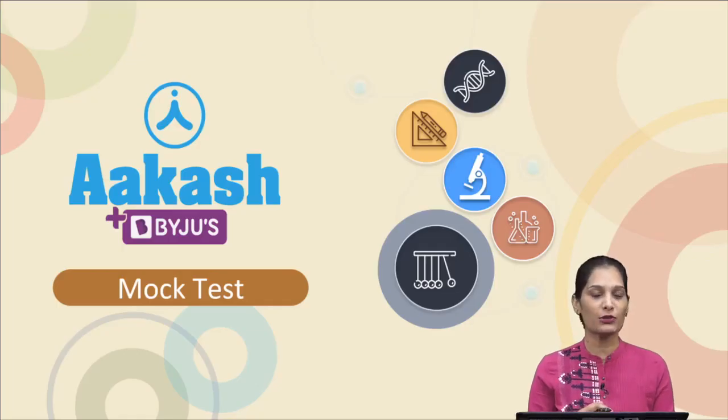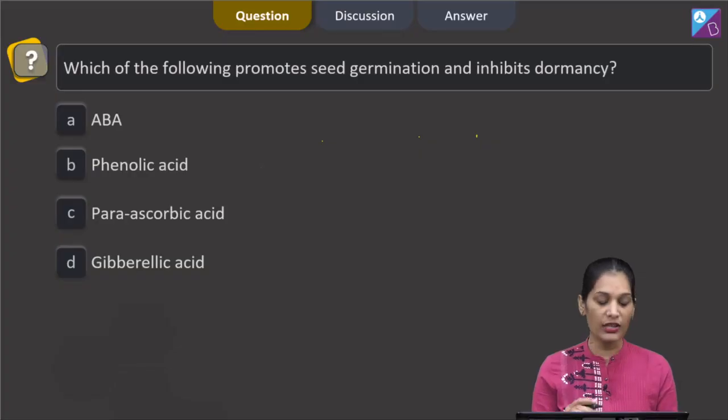Hello dear students, I am going to discuss the quick solutions of Akash Baidu's mock test paper. Let's quickly take the questions. The very first question says, which of the following promotes seed germination and inhibits dormancy?